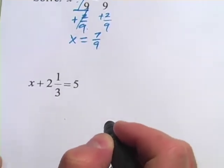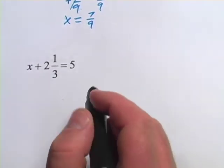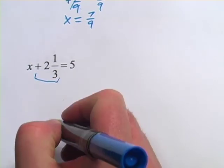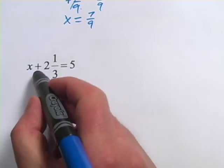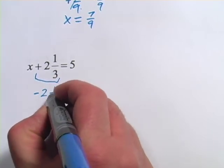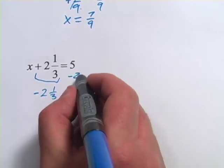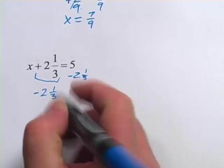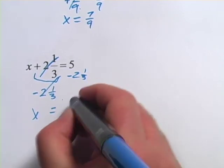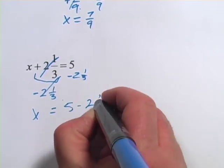All right we've got one more here. This is x plus 2 and a third equals 5. So here's our non-x term and since this is a plus 2 and 1 third we want to subtract 2 and 1 third. But we have to do it from both sides. That leaves just x over here. These come out to zero.